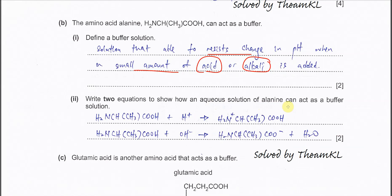Write two equations to show how an aqueous solution of alanine can act as a buffer. The COOH and NH2 groups in alanine will react with H⁺ or hydroxide. If acid is added, extra H⁺ reacts with the basic NH2 group and the nitrogen gains a proton, forming an ammonium ion. If hydroxide is added, it reacts with the carboxylic acid group, removing a proton to form a carboxylate salt.